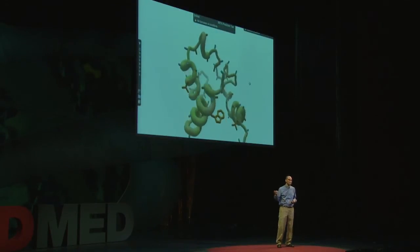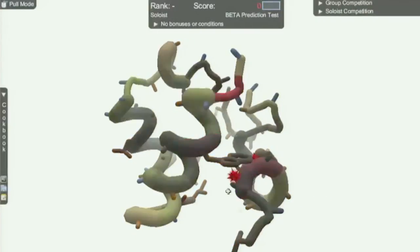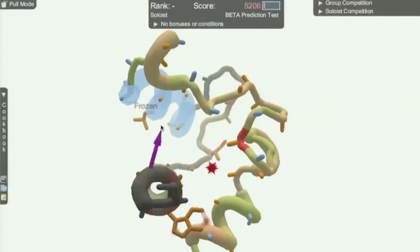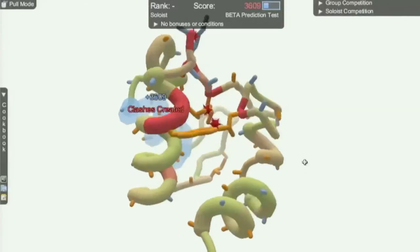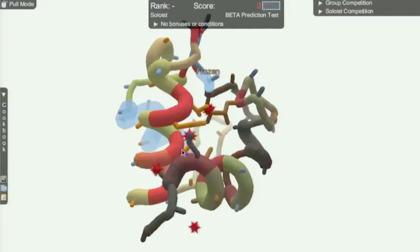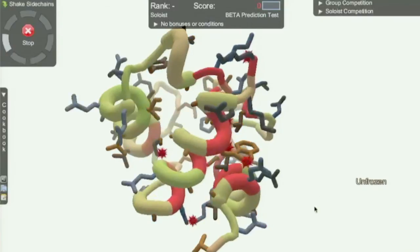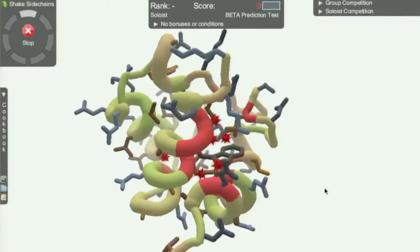So this is the game, Foldit. We designed it to try out a whole new approach to understanding proteins by engaging the game players and their problem-solving and creativity. The players directly manipulate protein shapes on their computers, and they compete and collaborate to try to find a high score by finding the best protein shape.